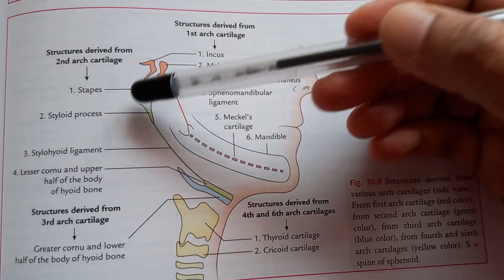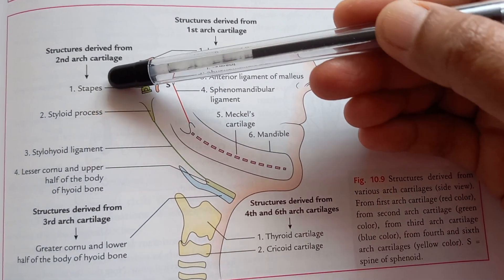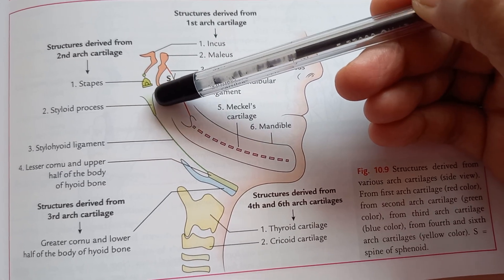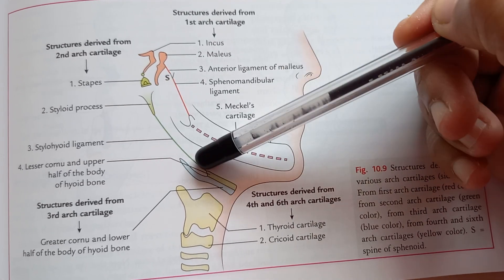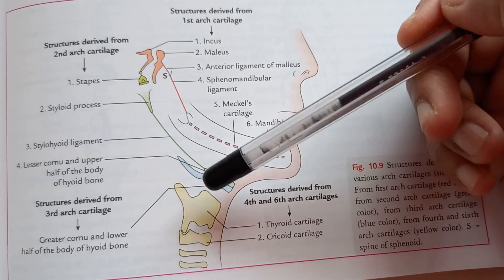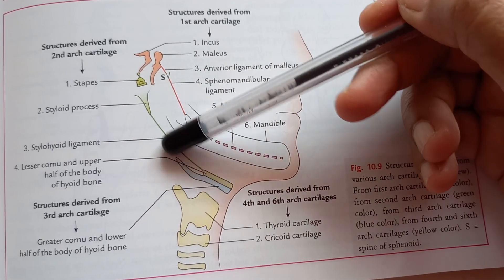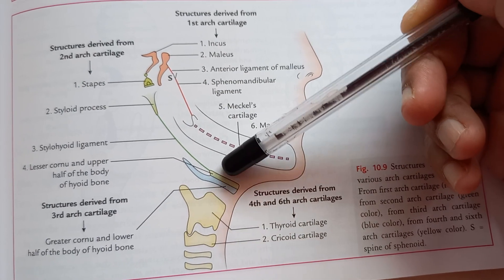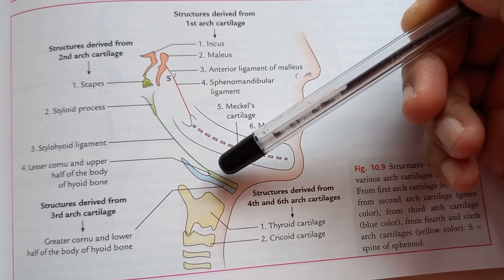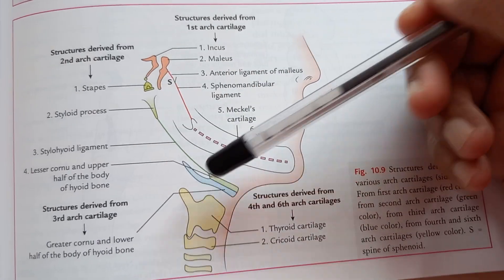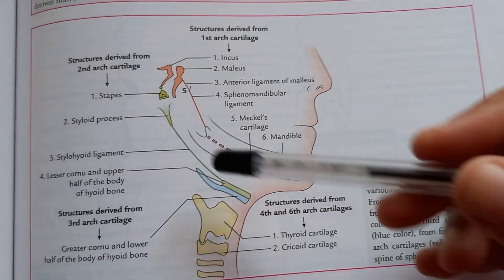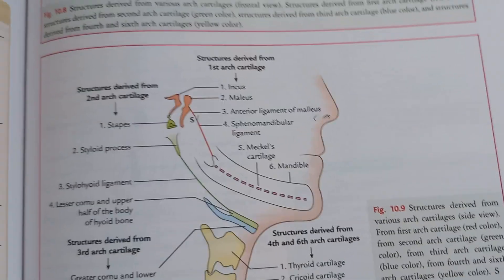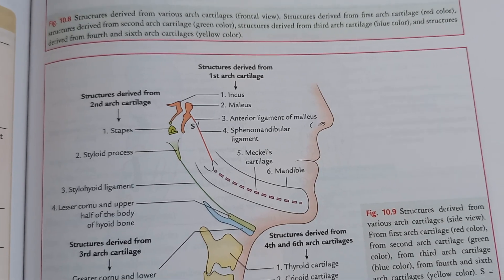From the second arch cartilage — shown in green — you get the stapes bone that's inside your ear, the ear ossicle. Then the styloid process, the stylohyoid ligament from the styloid process to the hyoid bone, then the hyoid bone upper part — the lesser cornu and upper half of the body of the hyoid bone. Interestingly, that ligament comes from cartilage.